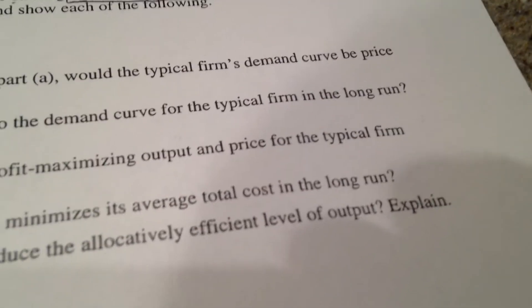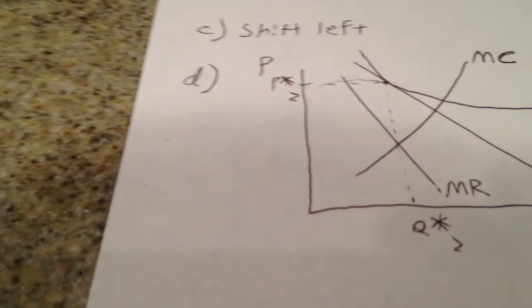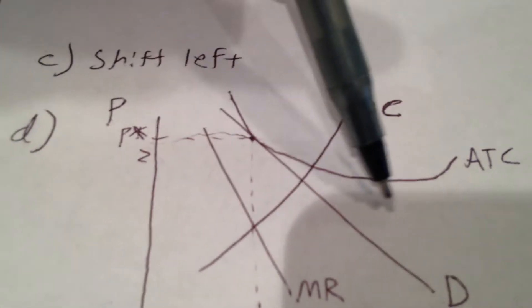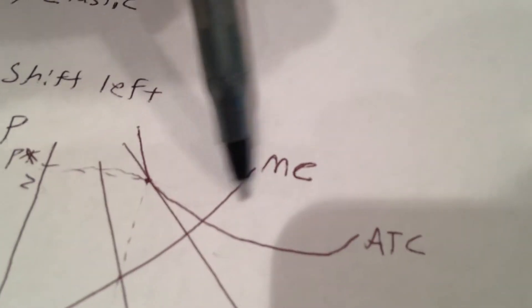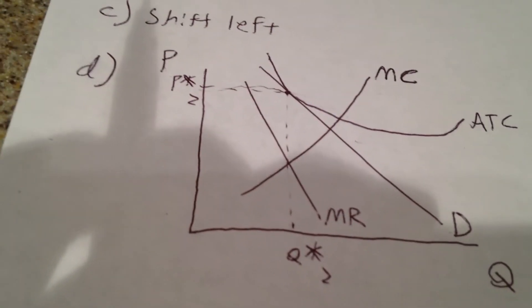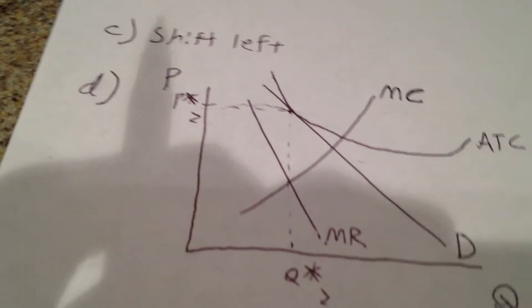Now we can go to letter E. Does the typical firm produce an output level that minimizes its average total cost in the long run? The answer is no. Why? Well, we know that average total cost is not at a minimum, as it becomes a minimum beyond the profit-maximizing output, somewhere in this region.